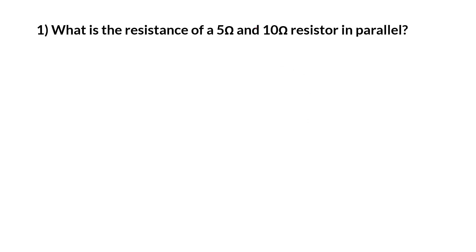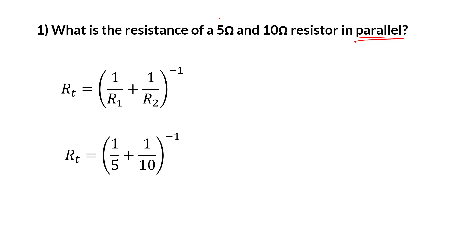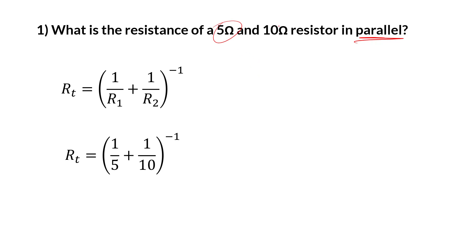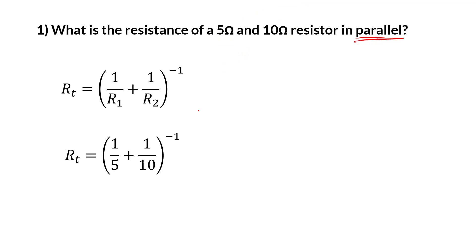Here's a practice question: what's the resistance of a 5 and 10 ohm resistor in parallel? This tells you to use the parallel resistance formula — you're not just adding them up like in series. Also note that when you have resistors in parallel, the answer is always going to be less than the smallest one, because more paths always decrease resistance. So adding the 10 ohm to the 5 ohm makes the combined resistance less than 5 ohms. When you do the math, you get 3.33 ohms.